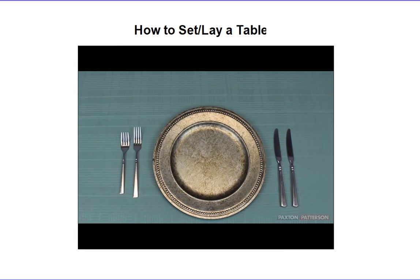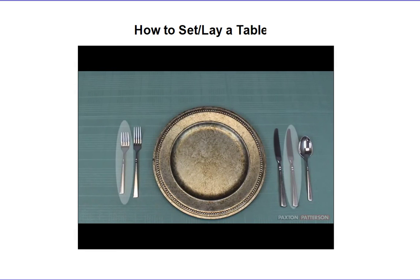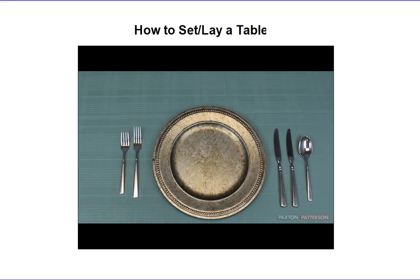If you are serving soup, it comes first, so the soup spoon goes outside of the knives on the right side. You always eat with the outermost silverware first, working your way in toward the center. Only set out the silverware you need, so if you're not serving soup, don't put out a soup spoon.